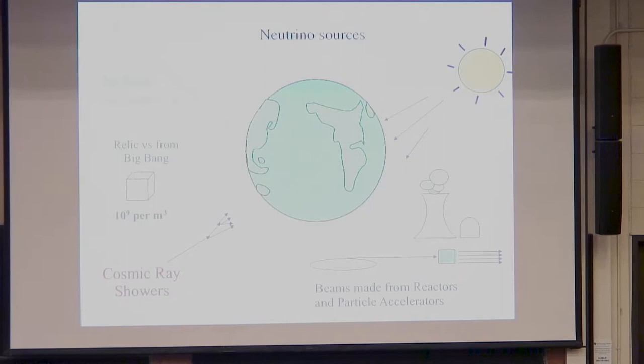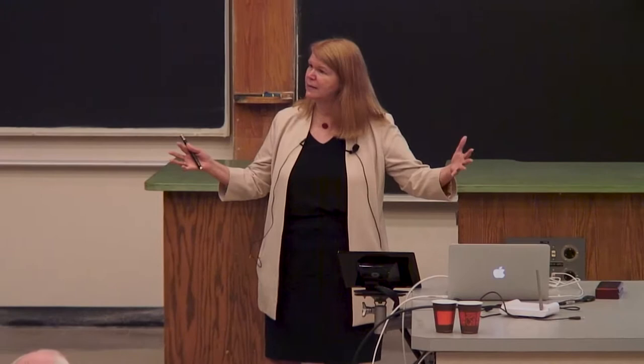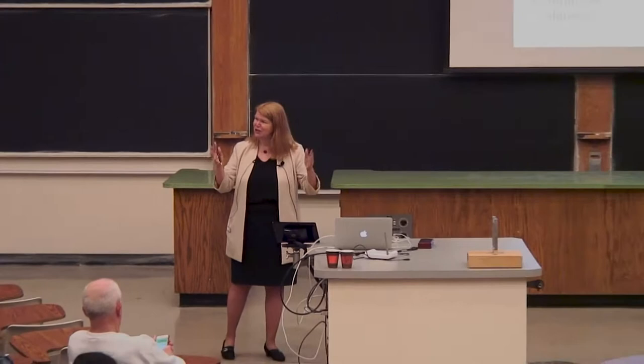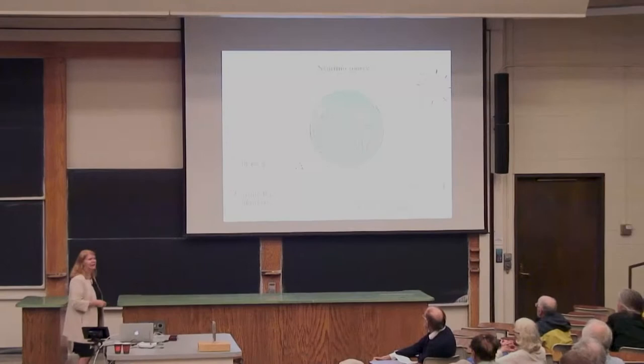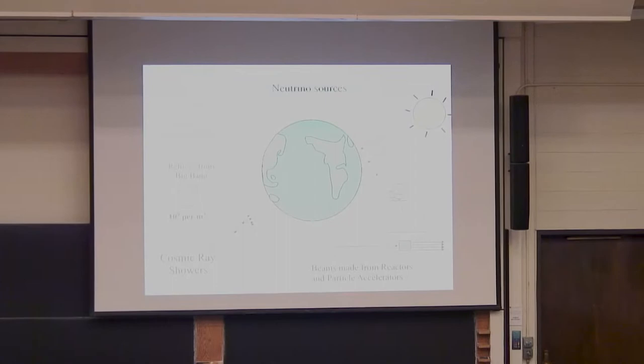We can also make neutrinos using particle accelerators or at reactors. We can see them in cosmic ray showers, produced when very high energy particles hit the atmosphere. When stars explode as supernovae, more than 99% of the energy actually comes out in neutrinos — that beautiful light you see is a very small fraction. And then there are the relic neutrinos from the Big Bang: a billion neutrinos in every cubic meter of space, everywhere in the universe.